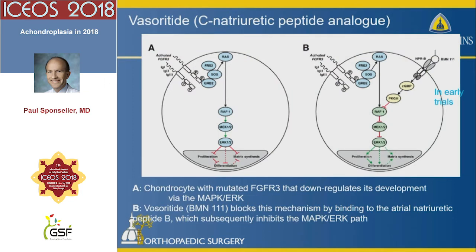This mechanism does provide, surprisingly, some potential opportunities for intervention. Translational research has shown that a natriuretic peptide can block this inhibition, and there's a clinical trial going on to look at the potential effect of this and other interventions to blunt the growth stoppage. There may be some hopes for future improvement in the natural history.